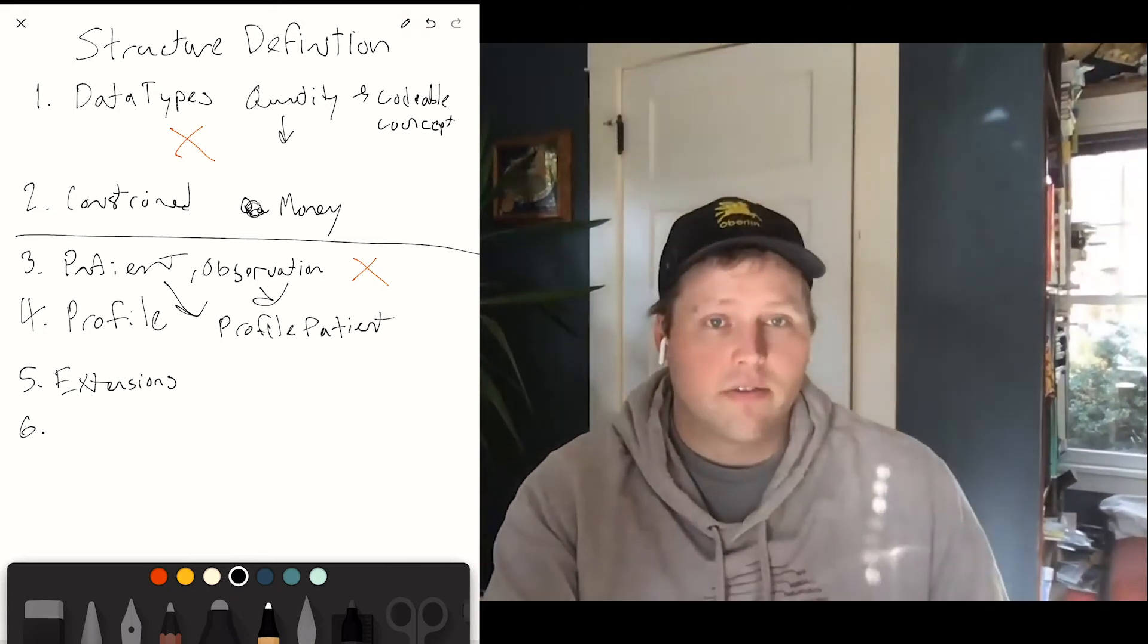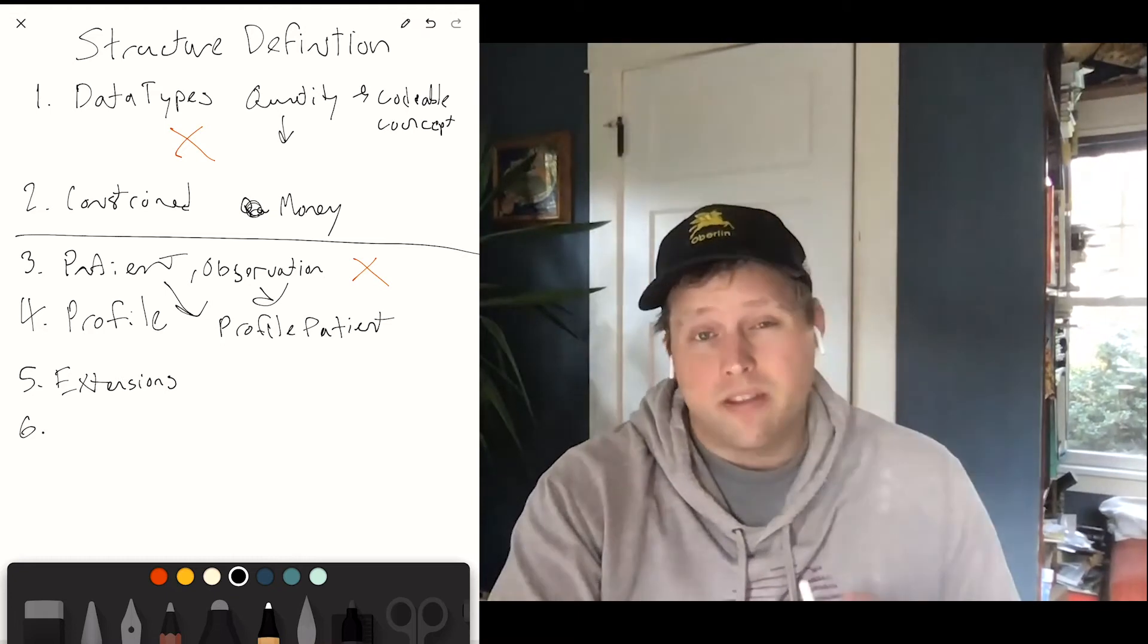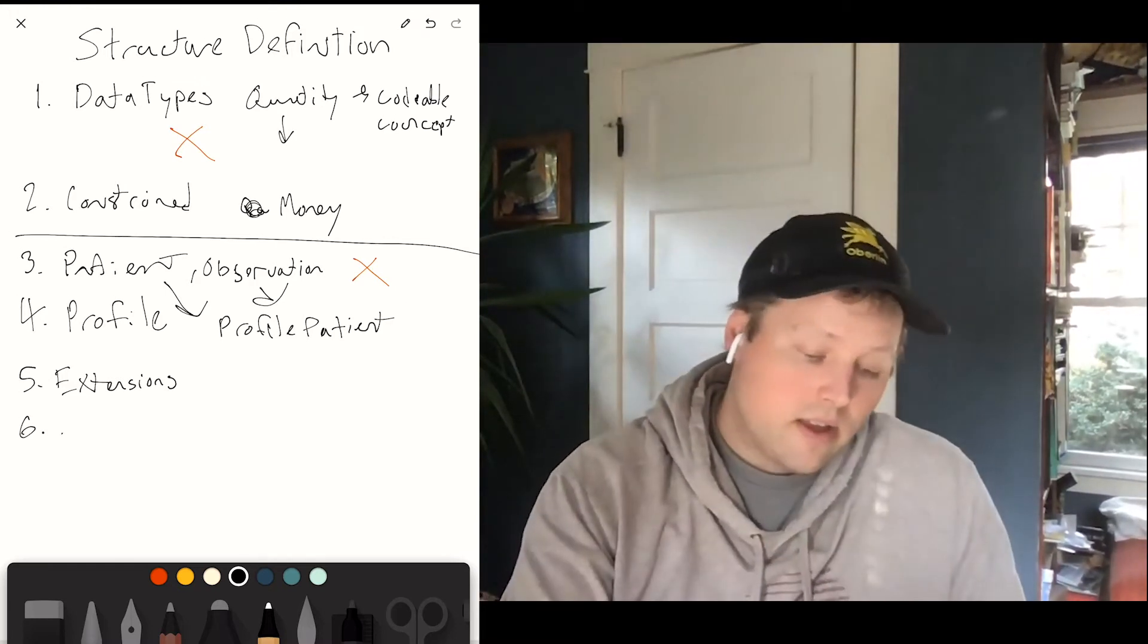So let's say I want to make a new extension, and maybe I want to extend patient. I want to make an extension called eye color or something. I would use structure definition to write what the structure of that eye color extension is. I need to pick a data type, maybe I need to say, okay, this comes from a set list of fields, a set value set, you know, blue, brown, green, hazel. I get to put all those things in this extension definition form of a structure definition.